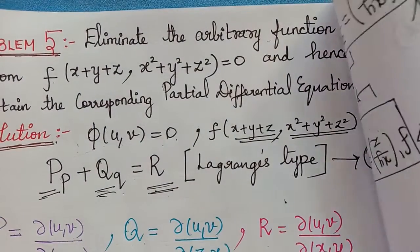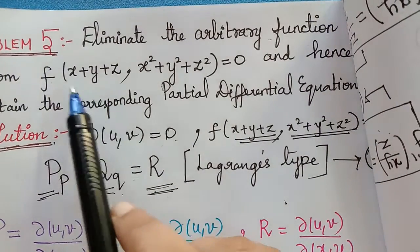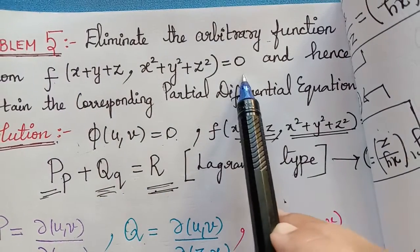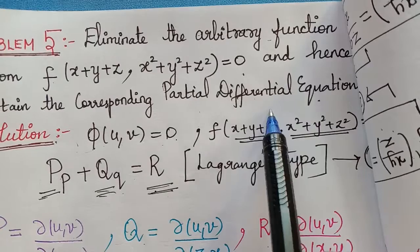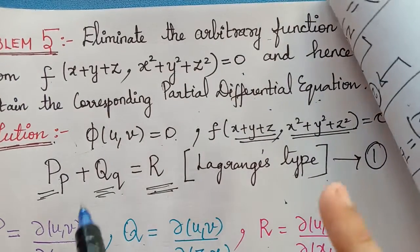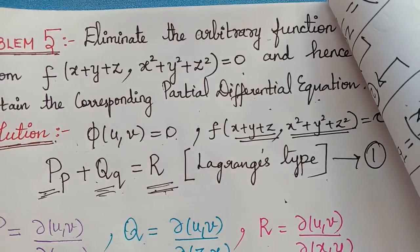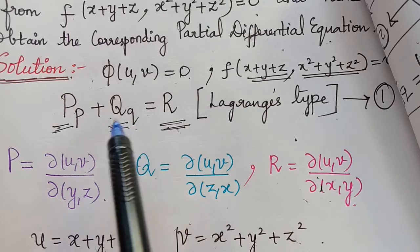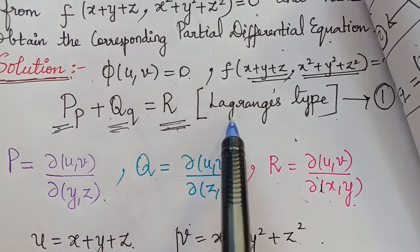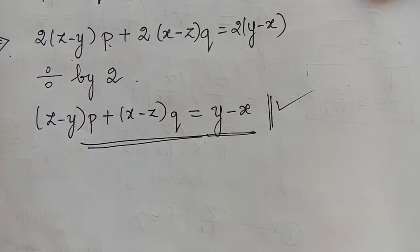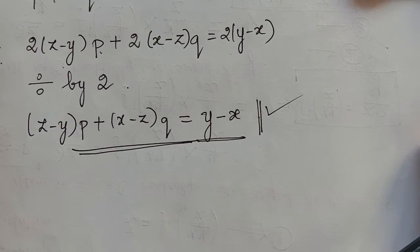Always remember: whenever the solution is given in the form F(u, v) = 0, the required partial differential equation will be of Lagrange's type, with P, Q, and R given by the respective Jacobian values. After finding these values, substitute directly into the Lagrange's equation to obtain the partial differential equation. Hope you have understood this problem. Thank you.